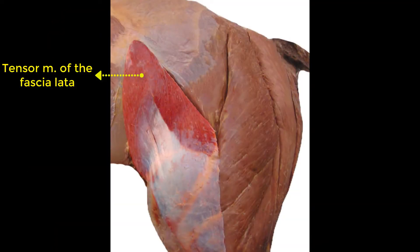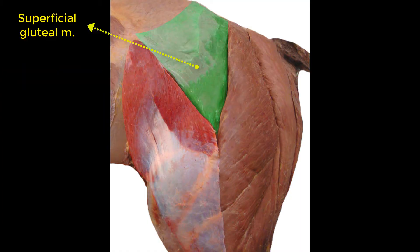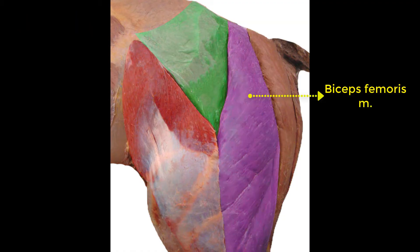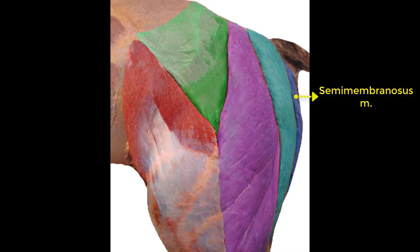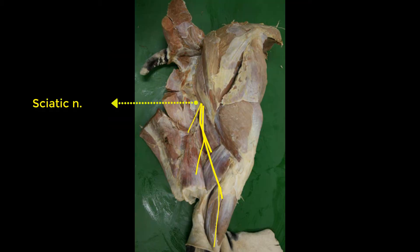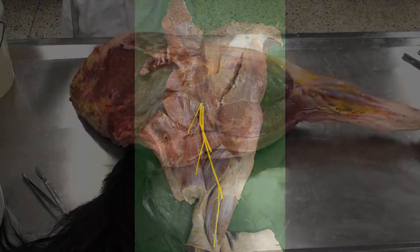Before we start the dissection, let's look at these muscles: the tensor fasciae latae, the superficial gluteal muscle, and in the lateral view we can see this big muscle — the biceps femoris. Caudal to it we have the semitendinosus muscle and finally the semimembranosus muscle. We will also talk in detail about the sciatic nerve in this video.